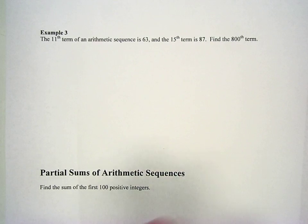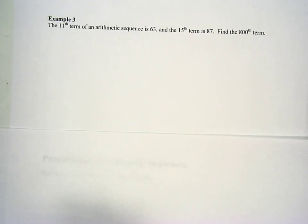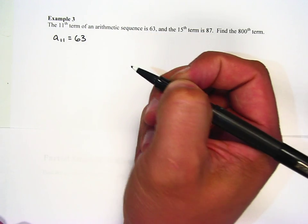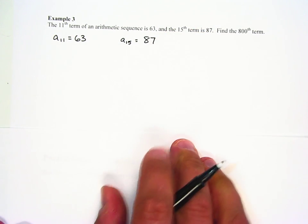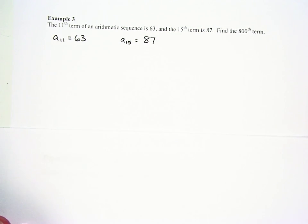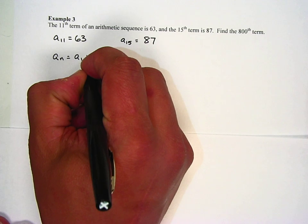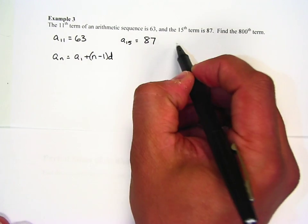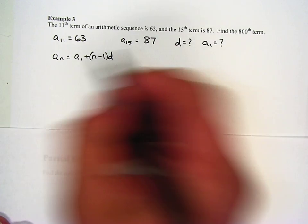This says the 11th term of an arithmetic sequence is 63 and the 15th term is 87. Find the 800th term. A lot of information here. So we know a sub 11 equals 63. We also know a sub 15 equals 87. Now if I plug that information in, I could use this a sub n equals a sub 1 plus n minus 1 times d. I don't know d. I don't know the first term, but I know n and a sub n.